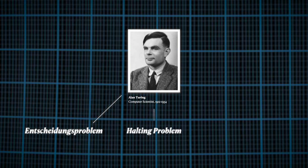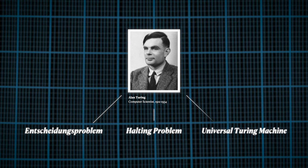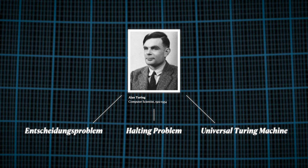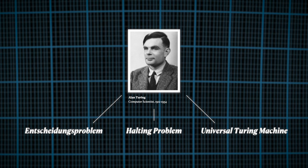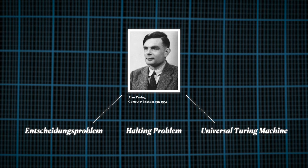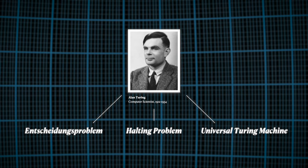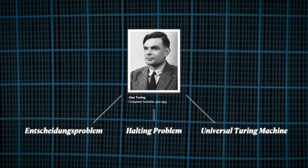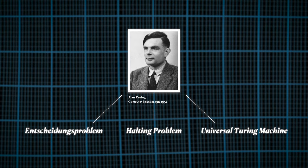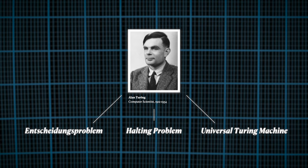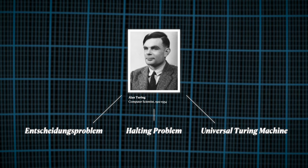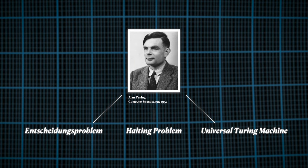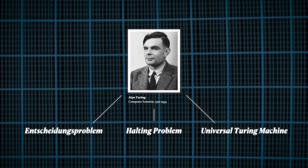Turing's work on the Entscheidungsproblem, the halting problem, and the Turing machine has had a lasting impact on the field of computer science and mathematics. His ideas continue to shape our understanding of the limits of what computers can do and have influenced research in fields such as artificial intelligence, computational complexity, and theoretical computer science. Even today, his work in these areas continues to be a guiding light for researchers.